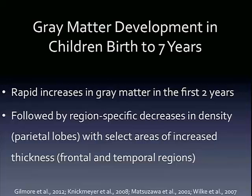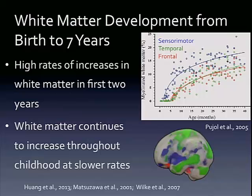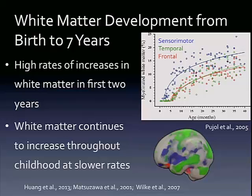We especially see increases in the frontal and temporal regions, and you'll start to see subcortical and parietal lobe decreases in gray matter towards the end of this age group. In regard to white matter, we're seeing high rates of increases in white matter again in the first two years of life, and then white matter continues to increase at lower rates. White matter development begins in the sensory motor areas and increases at the highest rates in those regions, but is also increasing in a similar trajectory in the temporal and frontal regions. In our sample, we did see a similar pattern to what we would expect here.